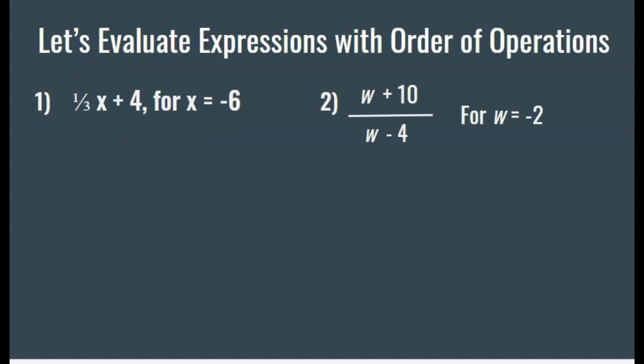Now we have two steps here, or more, so that means we have to use the order of operations to simplify. We're still going to start the same way. If you see a value for a variable, substitute that in first. For this first one, I have one-third x plus 4, and x equals negative 6. Substitute negative 6 in for x. Now, order of operations says to always multiply before adding and subtracting. So the first thing I do is one-third times negative 6, and I get negative 2. Then I rewrite my plus 4 because I haven't used it yet, and negative 2 plus 4 is 2.